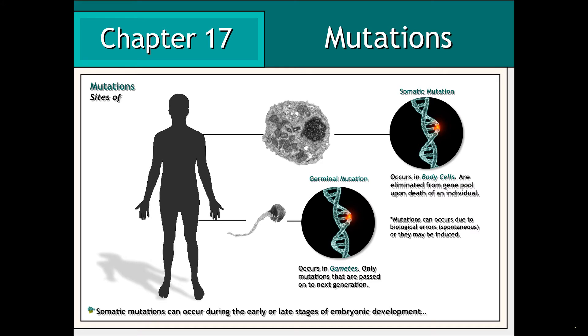Germline mutations occur in cells that ultimately form gametes. Thus, they have the potential to be passed on to future generations.